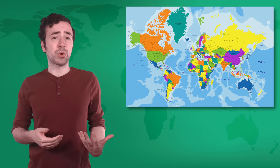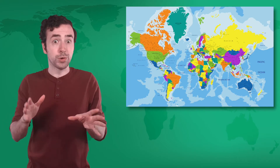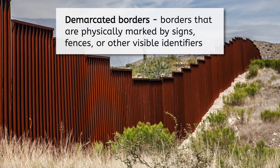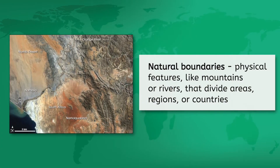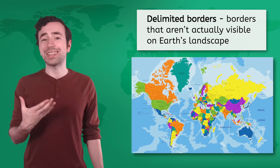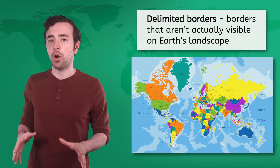But can these borders actually be seen in the real world? Some political borders are demarcated, meaning they are physically marked by signs, fences, or other visible identifiers. Some borders are even determined by natural boundaries, which are physical features like mountains or rivers that divide areas, regions, or countries.